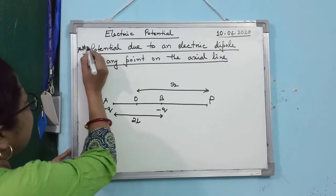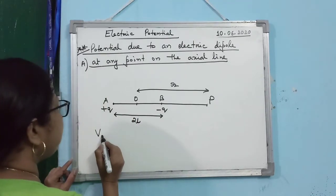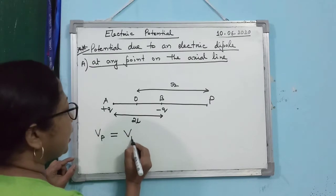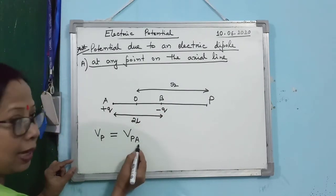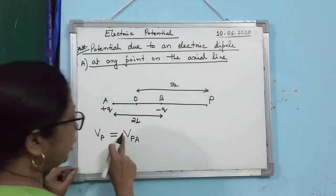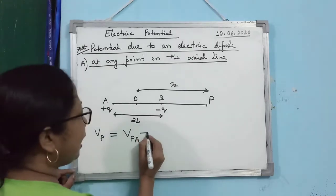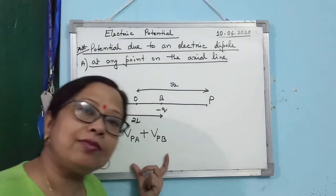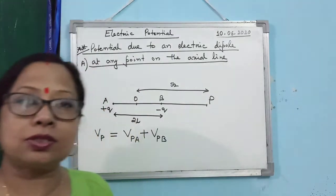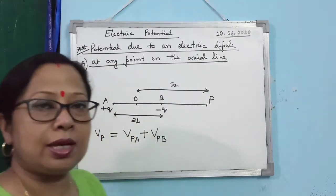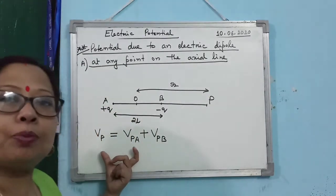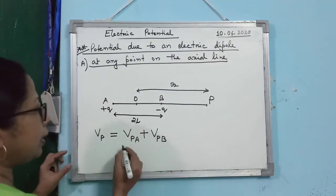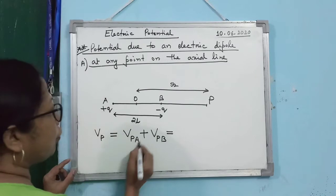This derivation is important for board exams. To find the potential at point P, use the superposition principle: VP = VPA + VPB, where VPA is the potential at P due to charge at A, and VPB is due to charge at B. Since potential is a scalar, we do scalar addition — unlike electric field where we needed vector addition.